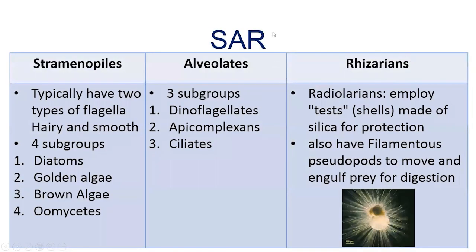The last group we'll look at is the SAR group, standing for stramenophiles, alveolates, and rhizarians. The stramenophiles typically have two types of flagella — hairy and smooth — and have four subgroups. The alveolates also have three subgroups. Rhizarians — we'll only look at one subtype, the radiolarians, which employ tests, which are shells made of silica for protection, and use filamentous pseudopods to move and engulf prey for digestion.